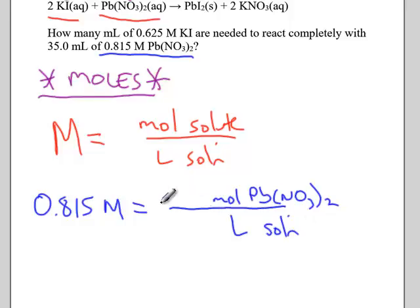And we want to choose numbers to make this fraction equal the concentration of 0.815. So the easiest number to choose is 1 liter in the bottom and 0.815 in the top.